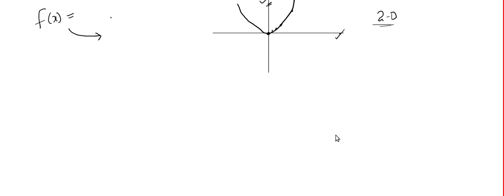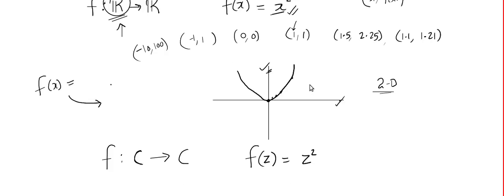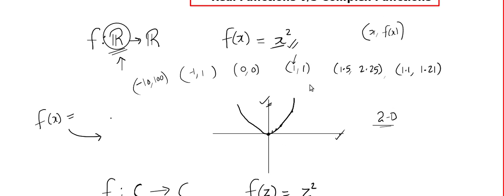Now let's move on towards a complex function. The difference between a real valued function and a complex function will be: the input will be from complex numbers and the output will also be from complex numbers. I am going to write a similar function: f(z) = z². You saw something very similar here — f(x) = x².